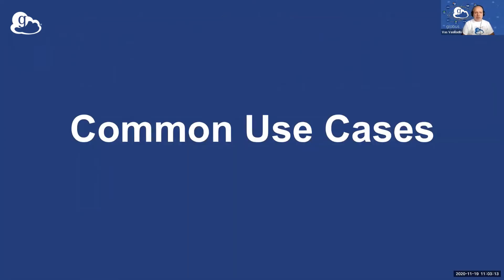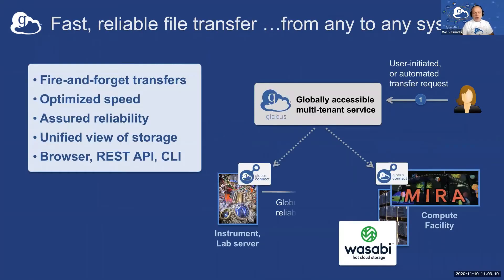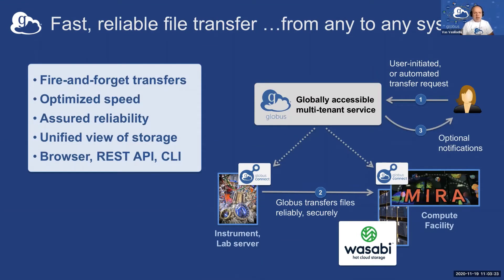I want to walk through very briefly just some of the common use cases we see with Globus. At the core, we have a reliable file transfer service, used extensively across all sorts of scientific and research domains. This is the ability to move files between any two storage systems that have what we call Globus endpoints on them — and that includes Wasabi endpoints as well as many other types of storage systems.